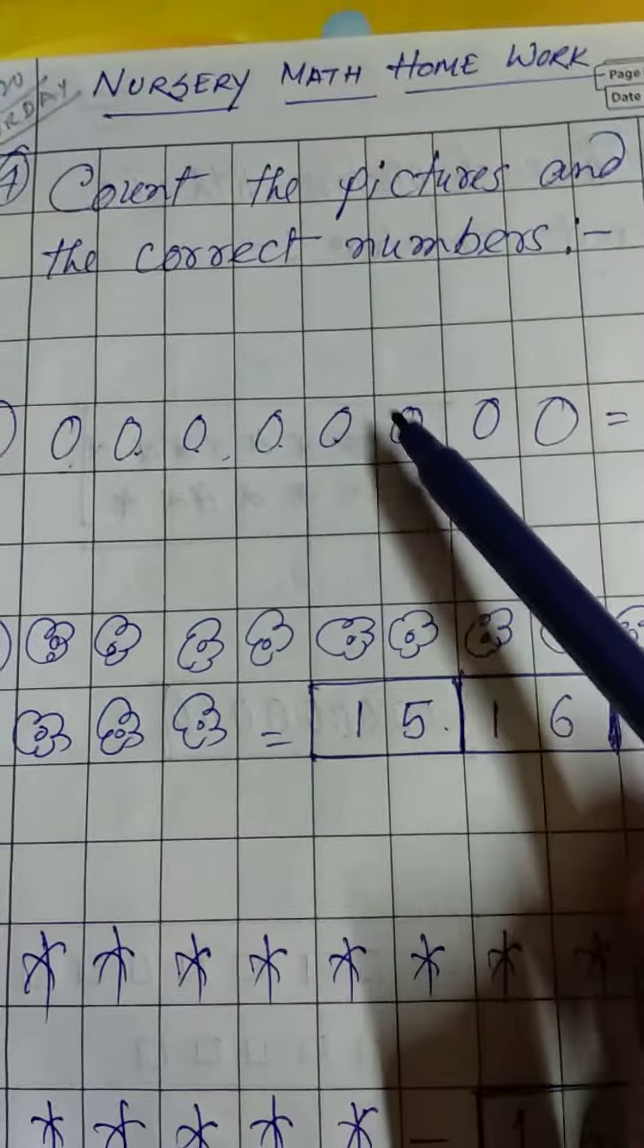So here is 15, here is 16, here is 17, so you have to circle 15. Okay, now next one.